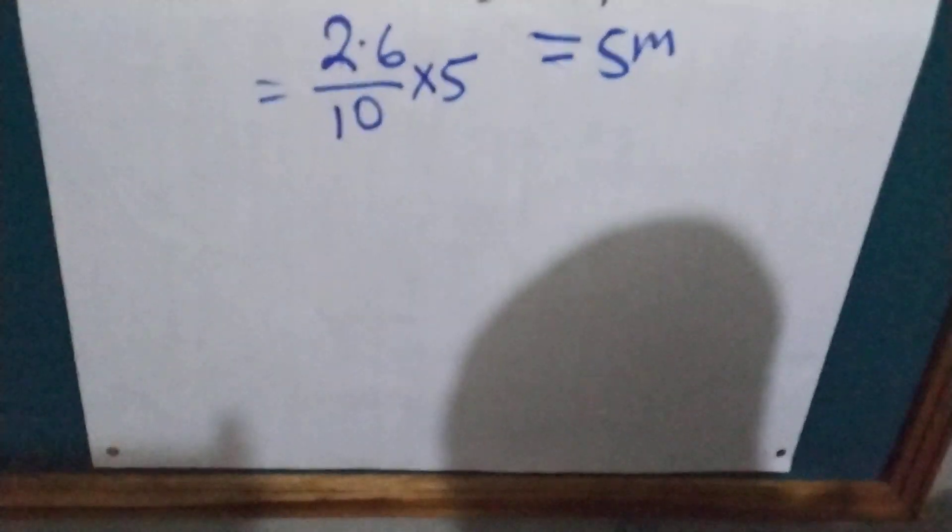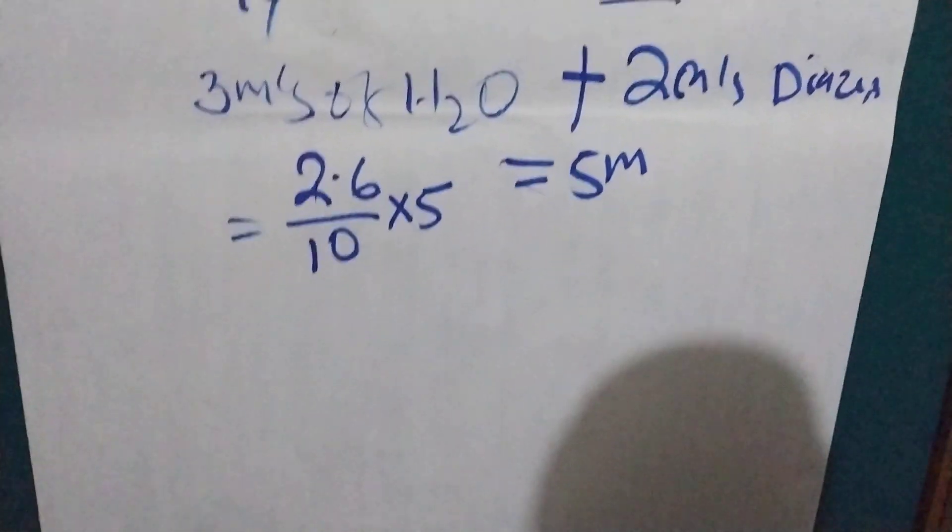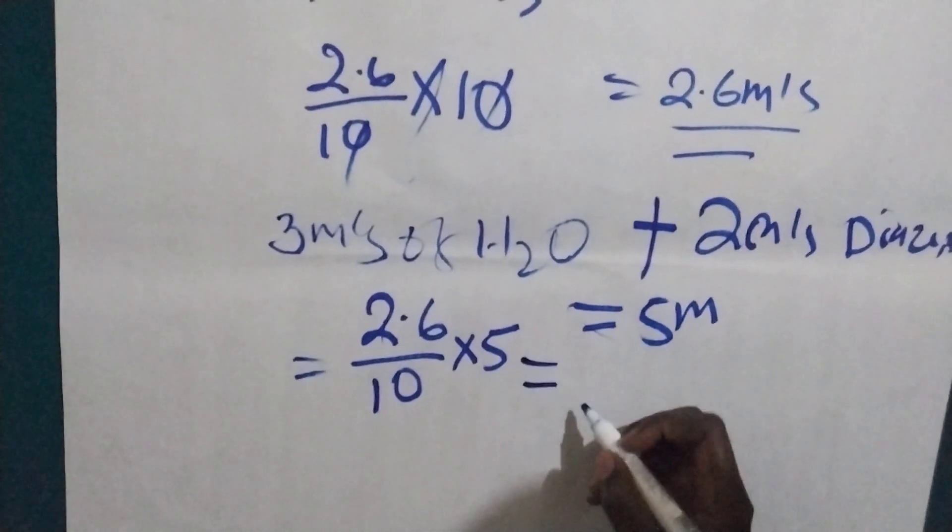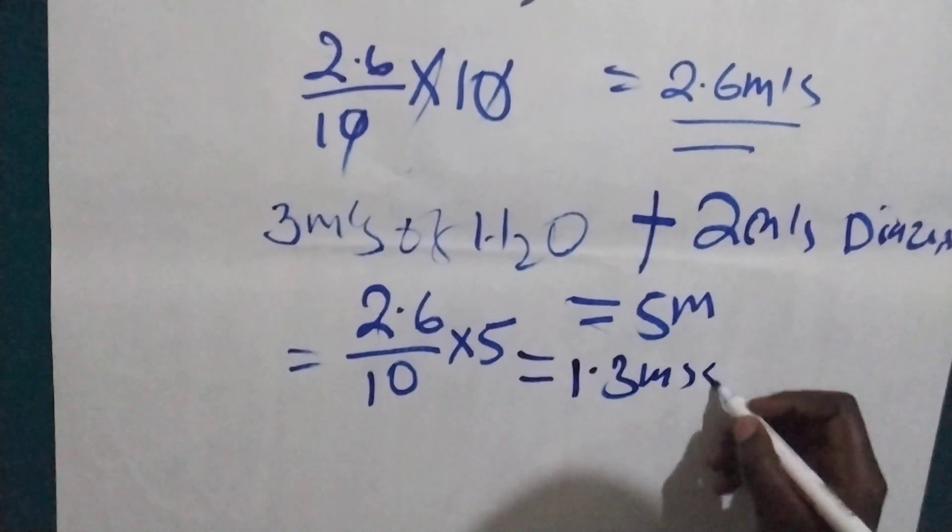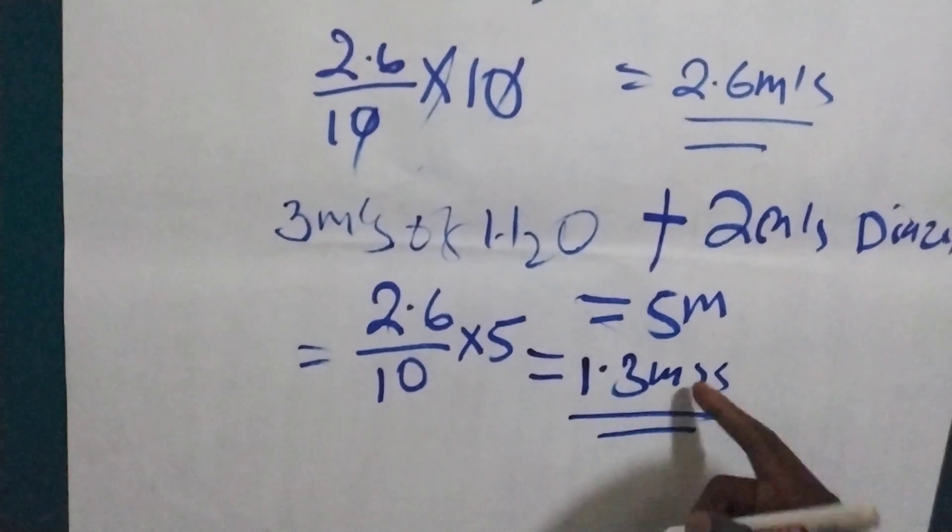So we are going to aspirate 1.3 mils and we are going to give to this child.